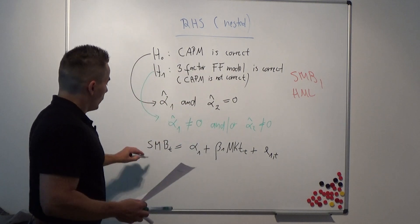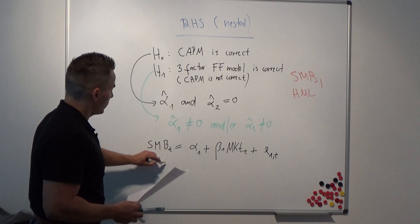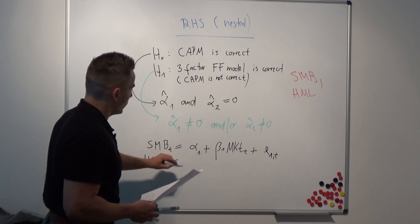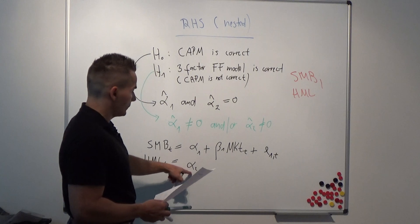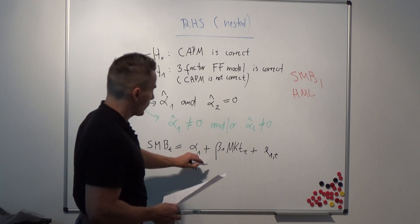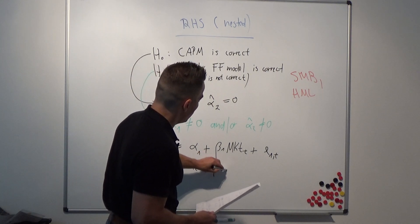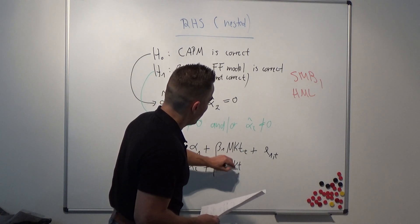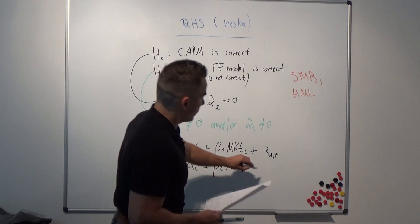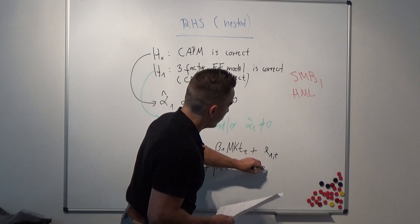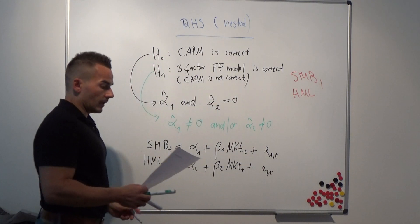Second, we regress the HML value factor at time T on an intercept alpha-2, plus beta-2 times the market factor — the CAPM variable — plus an error term epsilon at time T.